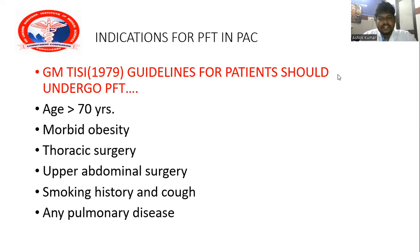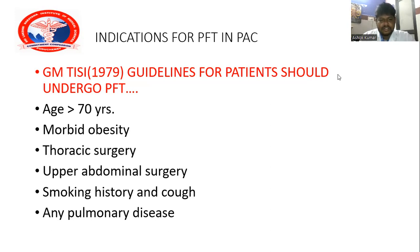Indications of pulmonary function tests in pre-anesthetic check-up: According to GM-PASI guidelines 1979, indications include old age — that is age more than 70 years — or morbid obesity, meaning BMI more than 40. Patients undergoing thoracic surgeries like lung transplant, pneumonectomy, cardiovascular surgeries, as well as upper abdominal surgeries — mainly laparoscopy, laparoscopic cholecystectomy, open cholecystectomy, splenectomy, or any other abdominal procedure. Also patients having smoking history and cough.